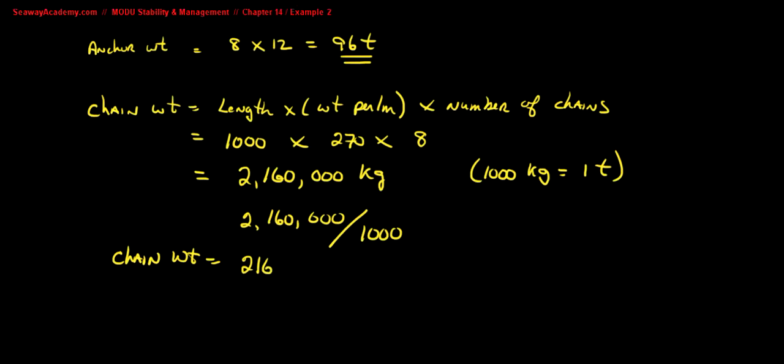To get the total weight reduction, we add the weight of the anchors that are deployed to the weight of the chain that is deployed. The weight of the anchors is 96 tons plus the weight of the chain is 2,160 tons, giving us a total weight reduction of 2,256 tons.